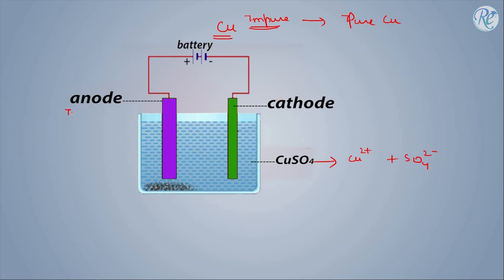A thick strip of copper is made the anode, and a thin strip of pure copper is made the cathode. Here we have impure copper that is made the anode, while a thin strip of pure copper is made the cathode.